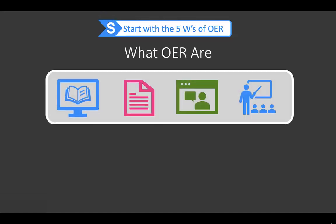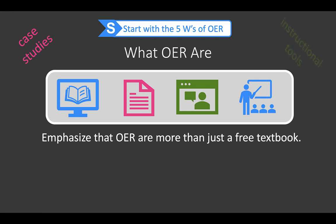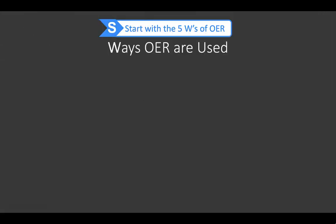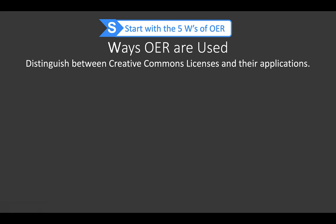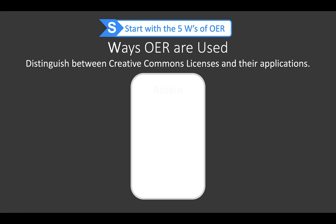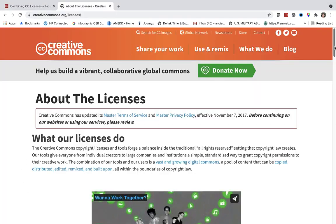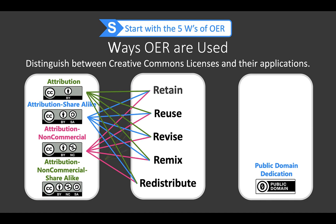Making it known that OER are available in multiple formats offers a gradual transition of OER implementation — if there is not a textbook available, if there are gaps in curriculum that need to be filled, if there is a desire for OER curation or creation, and if time restraints exist. Knowing the five R's, as coined by David Wiley, and ways licensed OER can or cannot be used together, ensure that OER are retained, reused, revised, remixed, and redistributed correctly. The BC Campus Open Education Faculty OER Toolkit and the Creative Commons website contain resources to explain the ways OER are used properly.